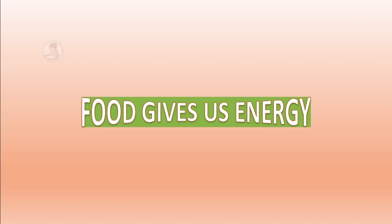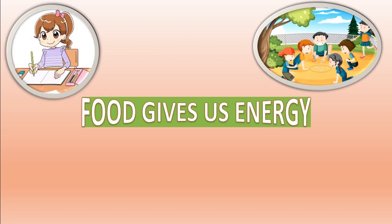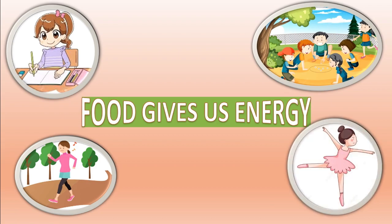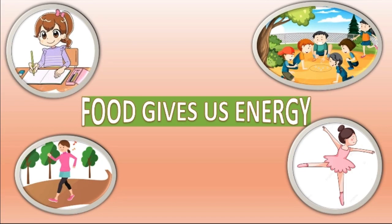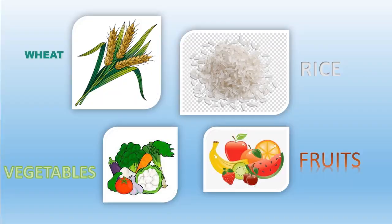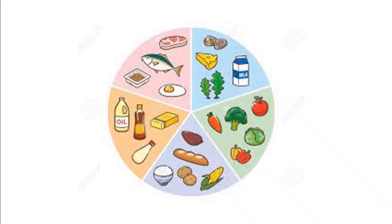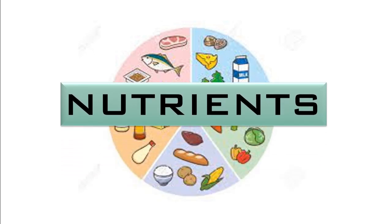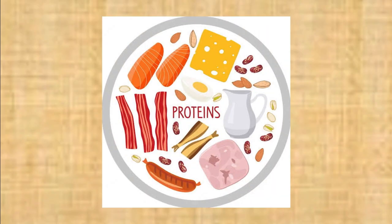Food gives us energy for doing different activities such as studying, playing, walking, dancing, etc. We eat different types of food like wheat, rice, vegetables, fruits, etc. The food that we eat contains substances that help our body to grow and stay healthy.